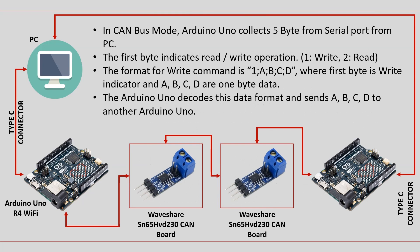In CAN bus mode, Arduino UNO collects five bytes from the serial port from the PC. The first byte indicates the read or write operation: 1 for Write, 2 for Read.